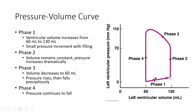In phase two, the volume remains constant. This is the isovolumetric ventricular contraction phase, where all four valves are closed, so blood is not moving and volume remains constant. There is no change in volume, but there is a drastic change in pressure as the ventricle begins to contract — a steep rise in pressure with no change in volume — and that takes us to phase three.